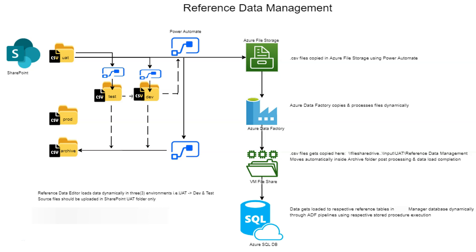We called this solution the Reference Data Editor. It loads data dynamically in three non-prod environments: UAT, dev, and test. Once the data is verified as correct in those environments, deployment is done in the prod environment. The first step is the user uploads a CSV file into the UAT folder. A Power Automate flow then synchronously copies that file into the test and dev folders.